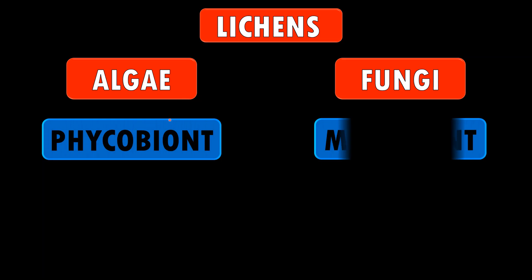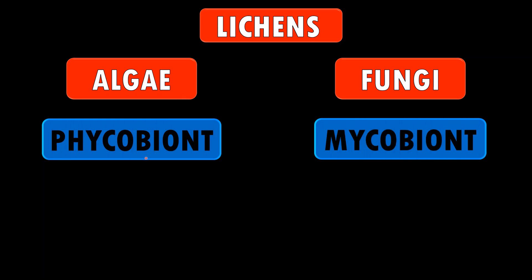Students, lichens are the association between algae and fungi. Here, the algal component is called phycobiont, whereas the fungal component is called mycobiont. Here, 'phycos' means algae and 'mycos' means fungi.